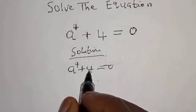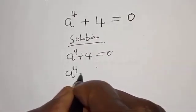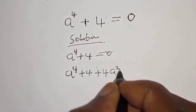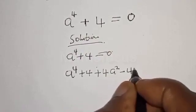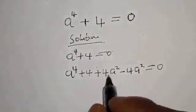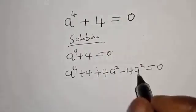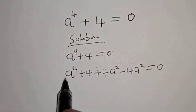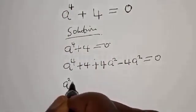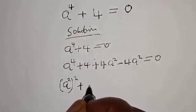Let's add and subtract 4a squared. So we have a raised to the power 4 plus 4 plus 4a squared minus 4a squared equal to 0. This does not formally change the equation because minus 4a squared plus 4a squared cancel out, still giving you a raised to the power 4 plus 4.